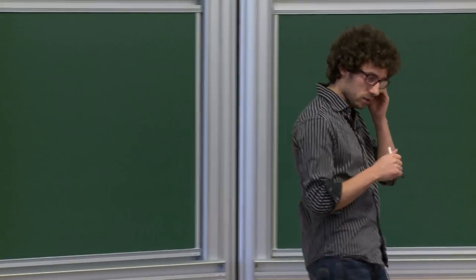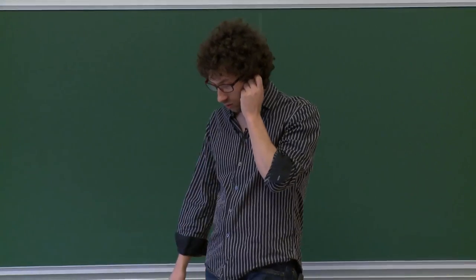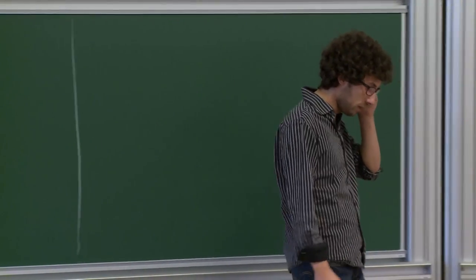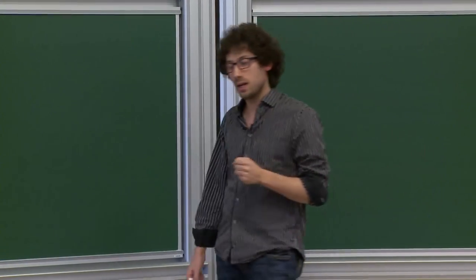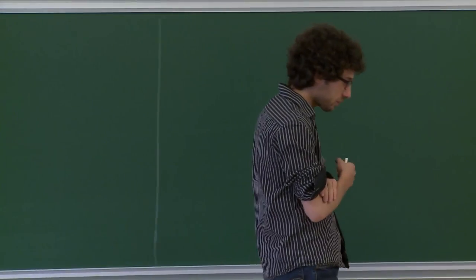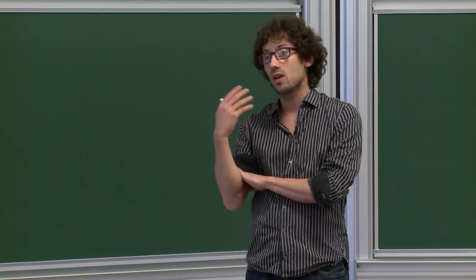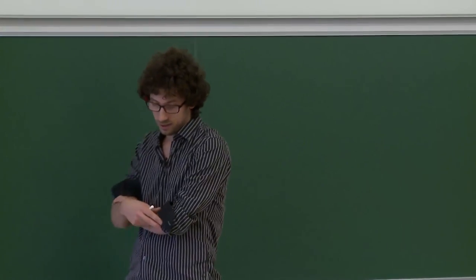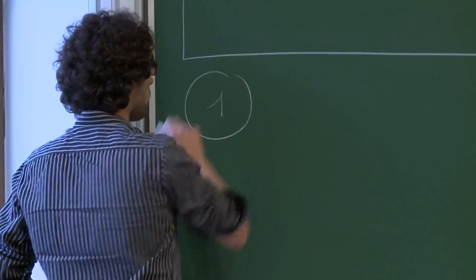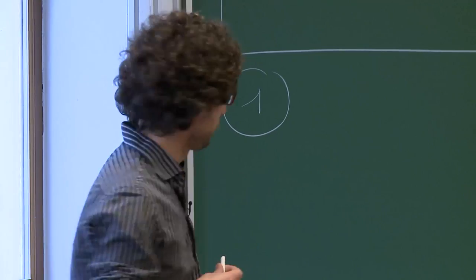Le modèle d'Ising peut être approché de plusieurs façons : à base d'algèbre, de géométrie, de probabilité. Mon but est de vous présenter une approche introduite dans les années 80, très puissante, qui s'inspire de tous ces domaines — combinatoire, intégrabilité, etc. Aujourd'hui, je vais surtout définir le modèle et vous donner une motivation, avec un aperçu des résultats qu'on montrera dans les autres cours.